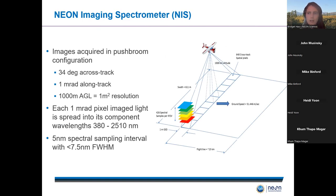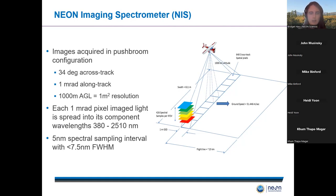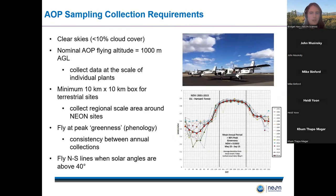NEON's imaging spectrometer — we call it MISS — flies along in a line, mowing-the-lawn pattern, collecting data in a push-broom configuration. We collect data at 1,000 meters above ground level, which gives us one-meter-squared spatial resolution. We collect bands between 380 to 2,500 nanometers — from the visible to the shortwave infrared — and each band has about a five-nanometer width, giving us very high spatial and spectral resolution compared to satellite data.